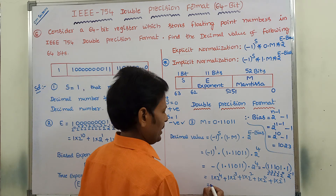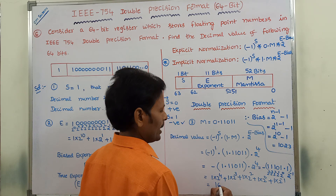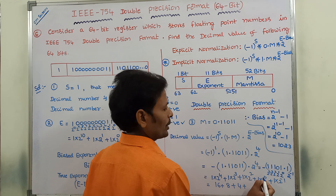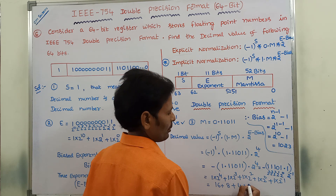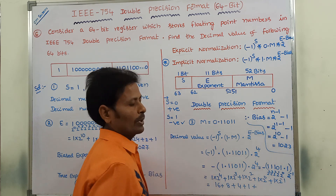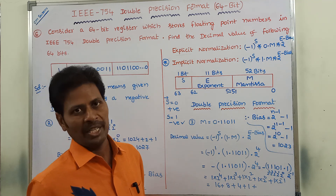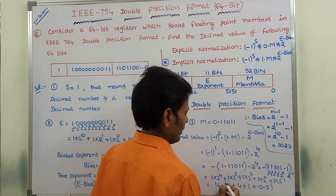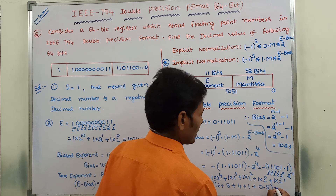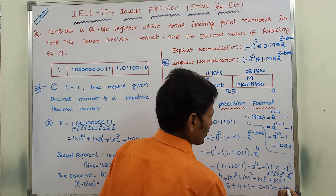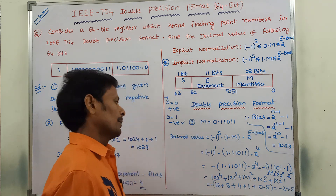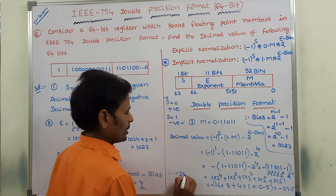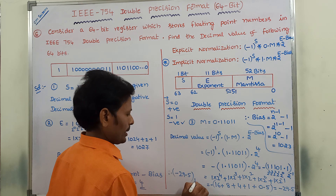So that: 1×2^4 is 16, 1×2^3 is 8, 1×2^2 is 4, 1×2^0 is 1, and 1×2^(-1) is 0.5. That is nothing but -29.5. Therefore, the decimal equivalent value is -29.5.